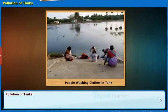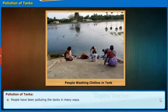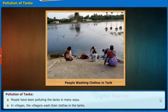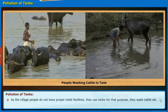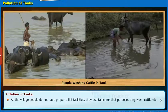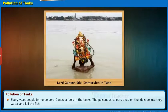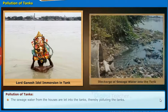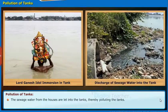Now we will go through the human activities that pollute the tanks. People have been polluting the tanks in many ways. In villages, villagers wash their clothes in the tanks. As the village people do not have proper toilet facilities, they use tanks for that purpose. They also wash cattle in the tanks. Every year, people immerse Lord Ganesha idols in the tanks; the poisonous colors dyed on the idols pollute the water and kill the fish. The sewage water from houses is let into the tanks, thereby polluting them.